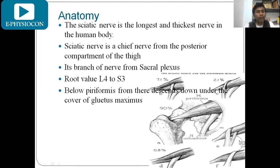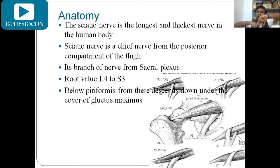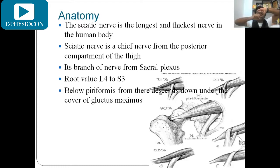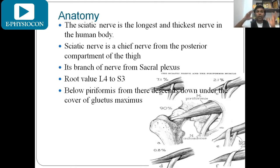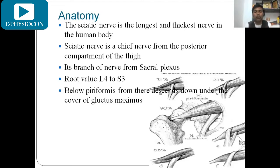You can observe here the nerve coming down below the piriformis muscle, passing under the cover of gluteus maximus. In 7.1% of people the sciatic nerve is pierced through the piriformis muscle. When there is hypertrophy or spasm in the piriformis, or prolonged sitting with a wallet in the back pocket compressing the piriformis, the nerve starts to become entrapped. This is one form of entrapment neuropathy, and pseudo sciatica is another entrapment neuropathy when the pathway gets a space-occupying lesion.